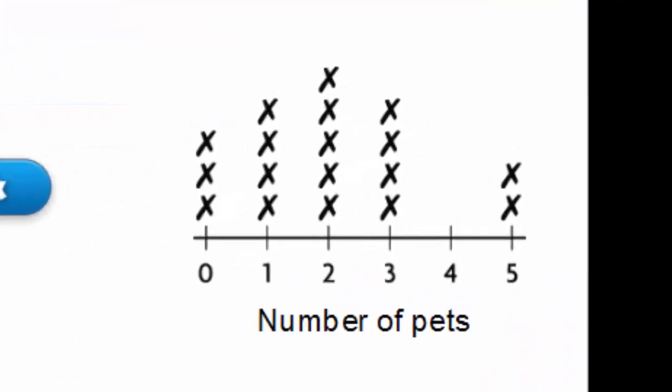Look at this line plot. How many students have one pet? There's the number of pets: zero, one, two, three, four, and five. How many had one pet?